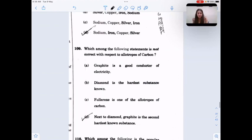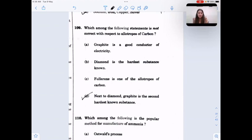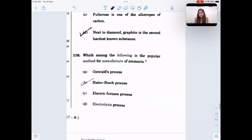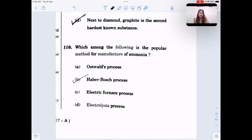Which one of the following statement is not correct with regards to allotropes of carbon? Graphite is conductive, we know diamond is the hardest substance, and fullerene is an allotrope. Last option says that next to diamond, graphite is the second hardest compound. No, this is not true. Graphite is soft compared to most of the other elements. Next, which one of the following is popular method for manufacturing of ammonia? Manufacturing of ammonia is by Haber's process. Answer is by Haber-Bosch process.